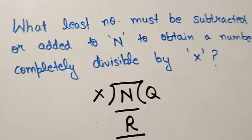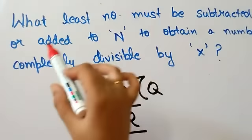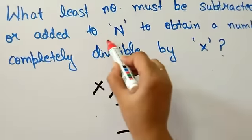To solve such questions, just remember this trick. Suppose that the least number must be subtracted from or added to n to obtain a number which is completely divisible by x. Divide n by x and you will get a remainder r. If you are asked what least number must be subtracted, your answer will be r. When you are asked what least number must be added, your answer will be x minus r.